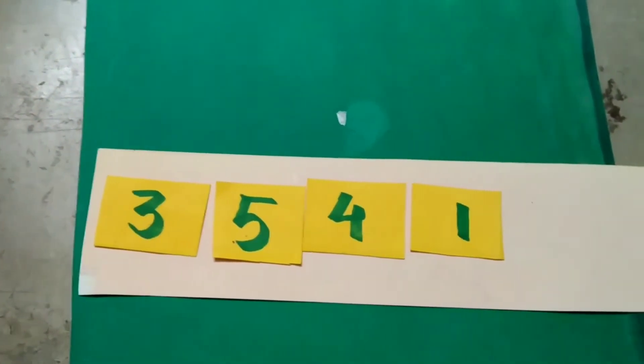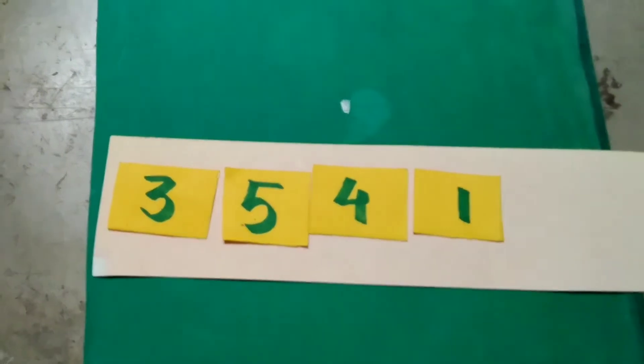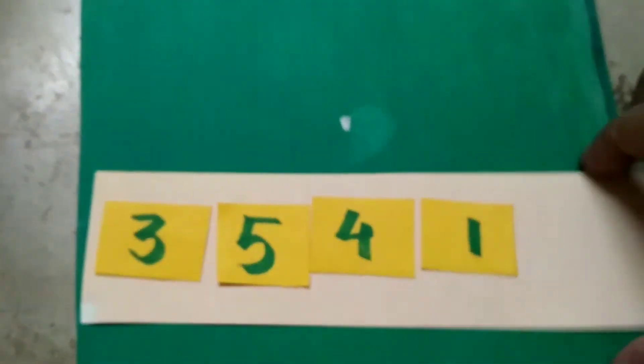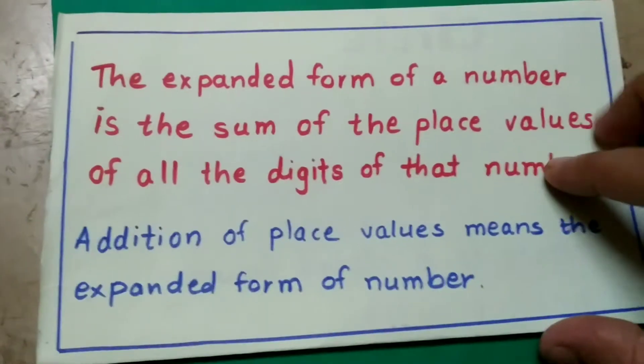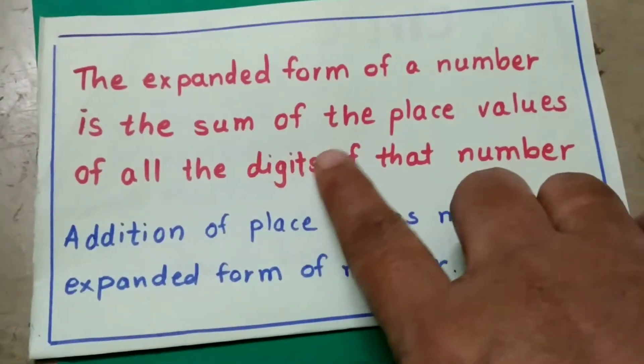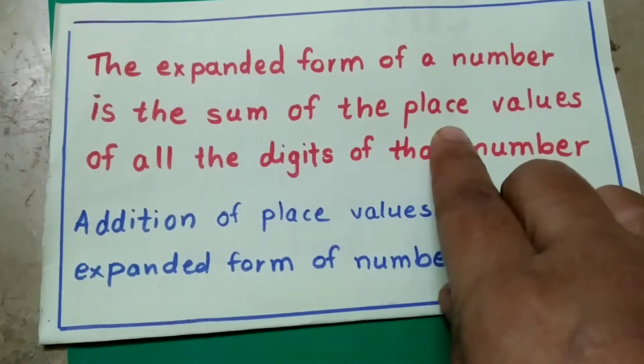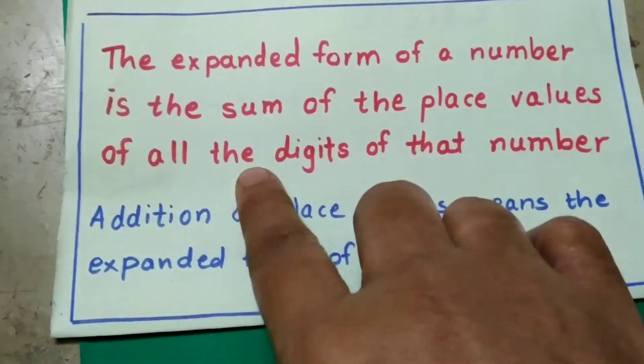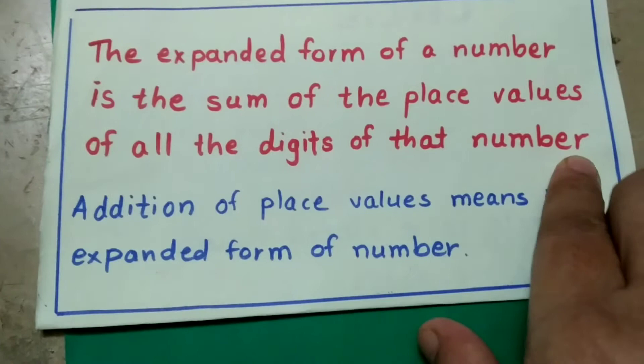Now let's have a look at the expanded form. The expanded form of a number is the sum of the place values of all the digits of that number.